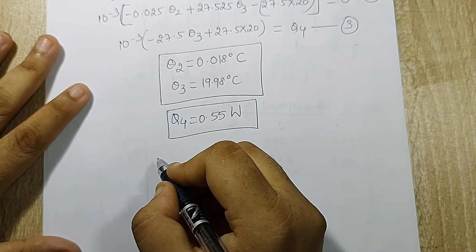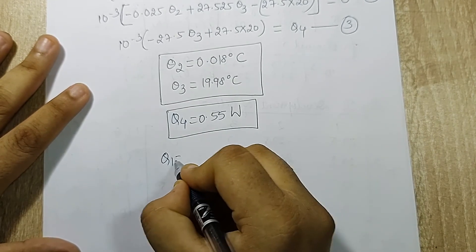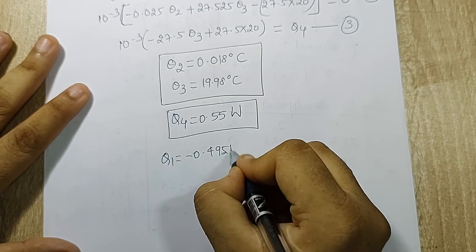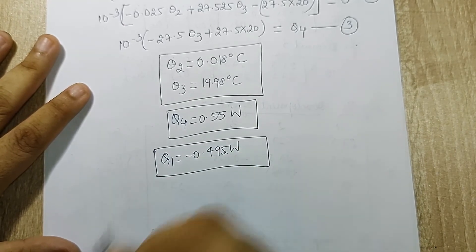And when I revisit the equation, I get the value of q_1 as minus 0.495 watt. I think you can write the equation by now.